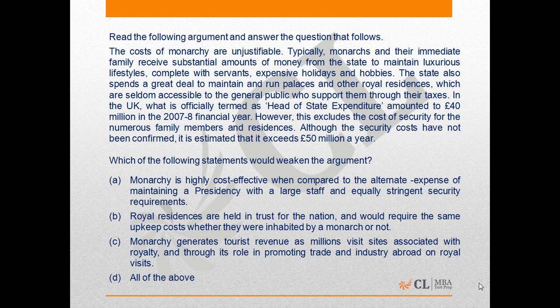Option B: Royal residences are held in trust for the nation and would require the same upkeep costs whether they were inhabited by a monarch or not. This option says that irrespective of the form of government, the royal residences are a property of the country and they will have to look after them whether there is a monarchy or not, whether the royal family lives in it or not. So this cost remains the same irrespective of the form of government, and this definitely weakens the argument.